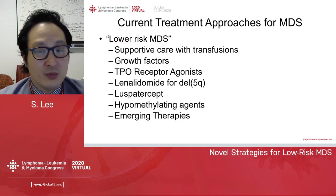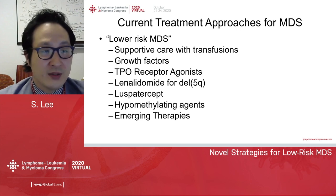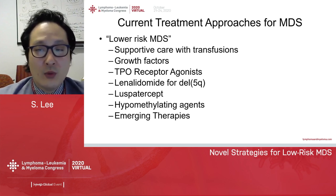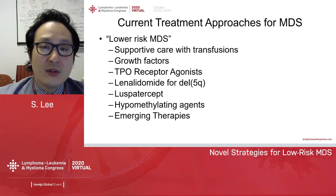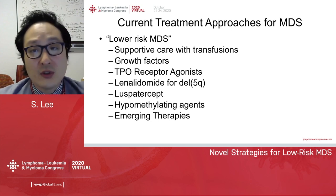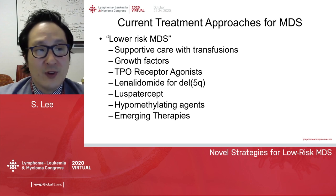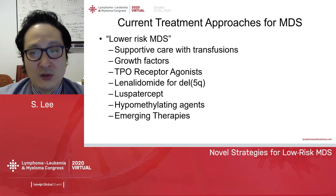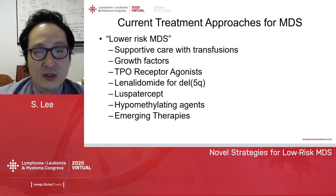Here are the current treatment approaches we utilize for lower-risk MDS. For patients who are not transfusion-dependent or require very infrequent transfusions, supportive care with transfusion support is reasonable. In terms of intervention, several options are currently available, which include growth factor support, thrombopoietin receptor agonists, lenalidomide in select cases, luspatercept, hypomethylating agents, as well as novel agents in the context of clinical trials that are emerging.